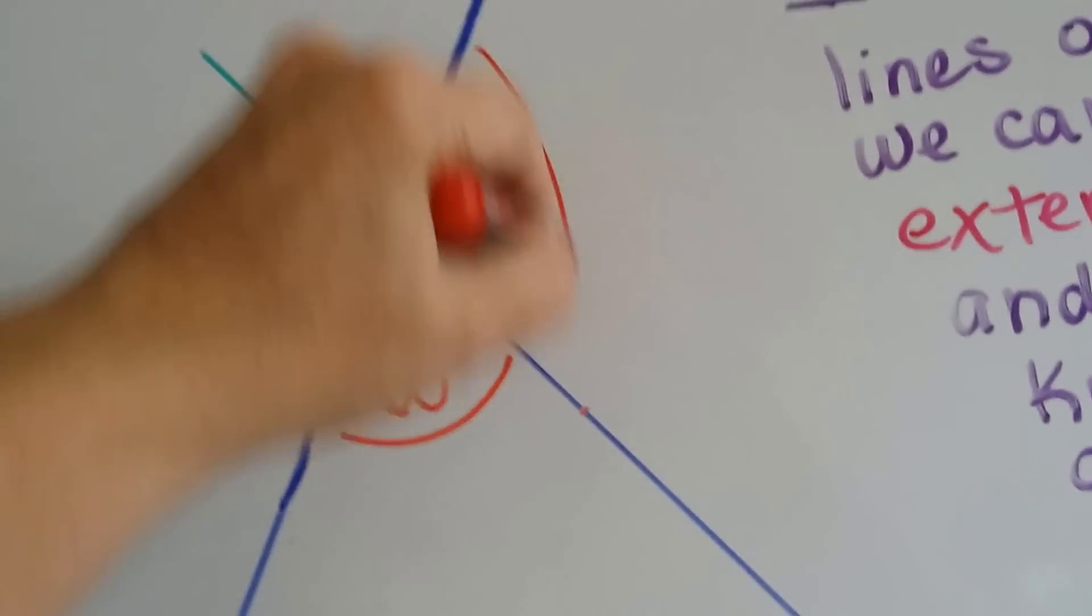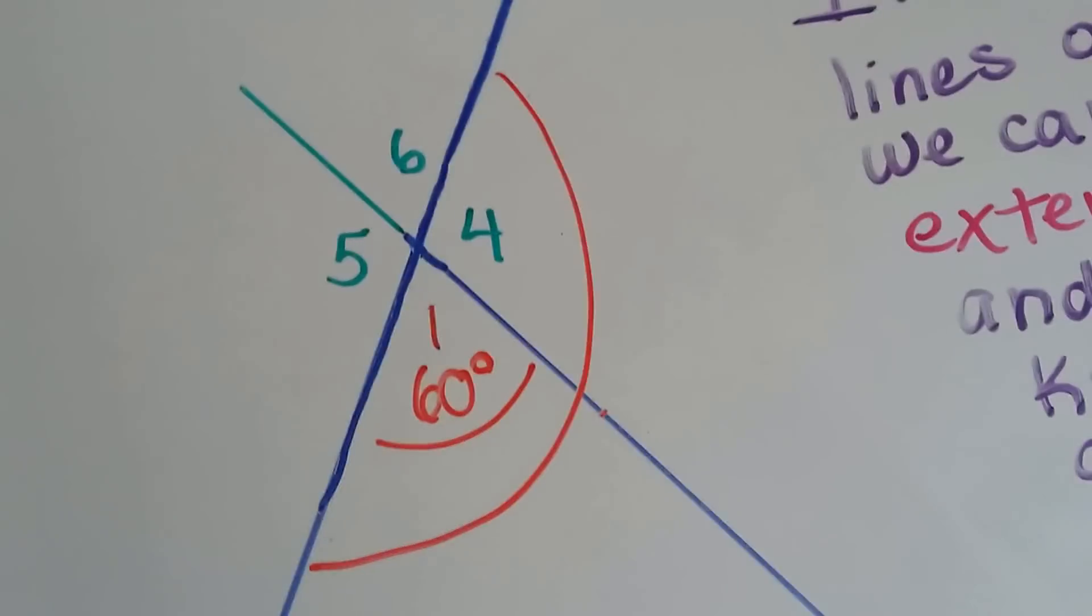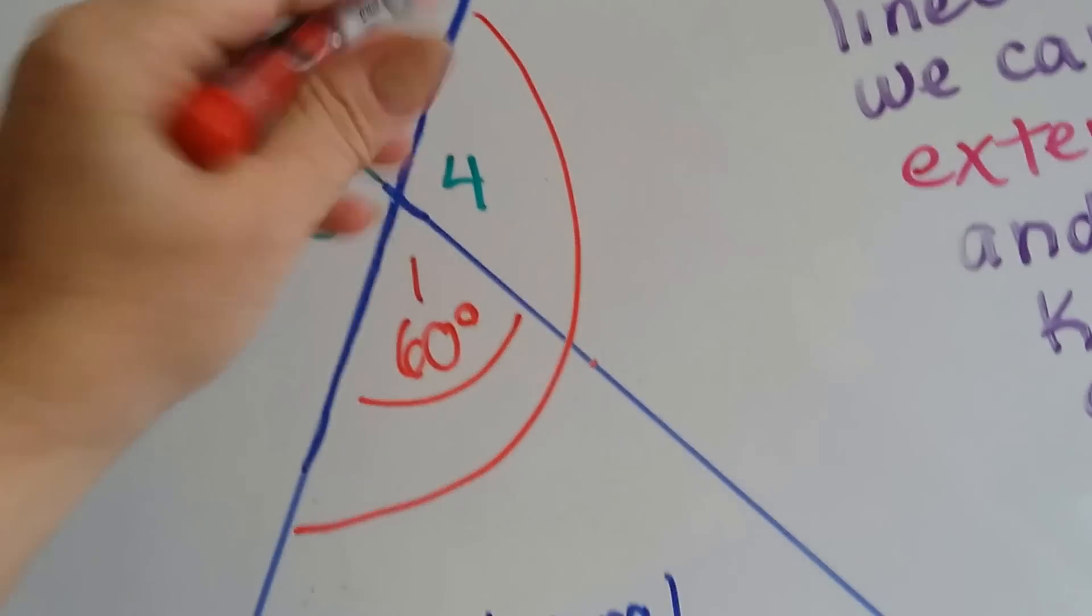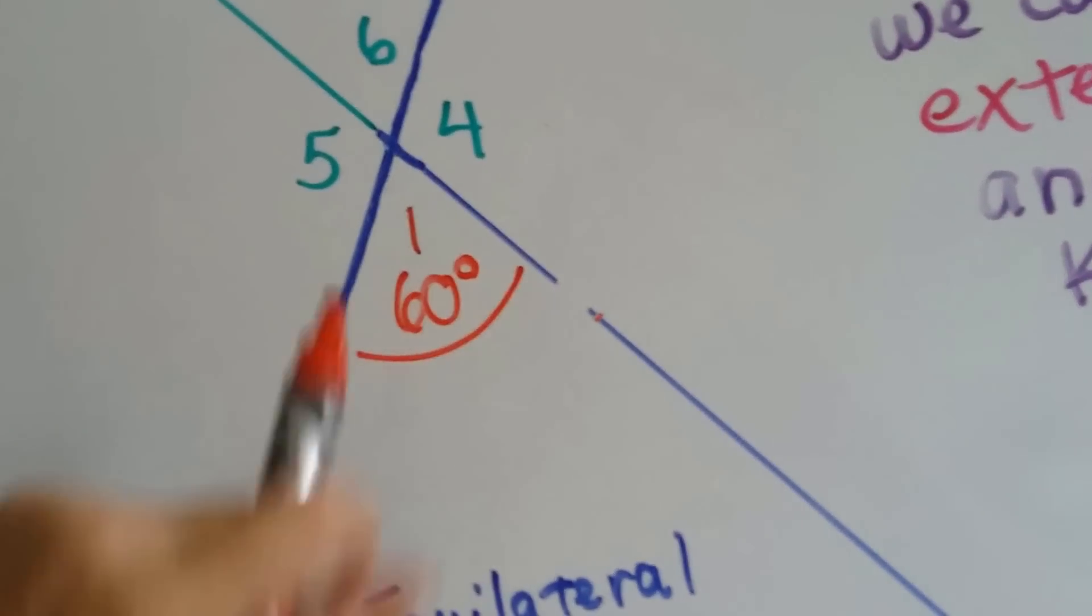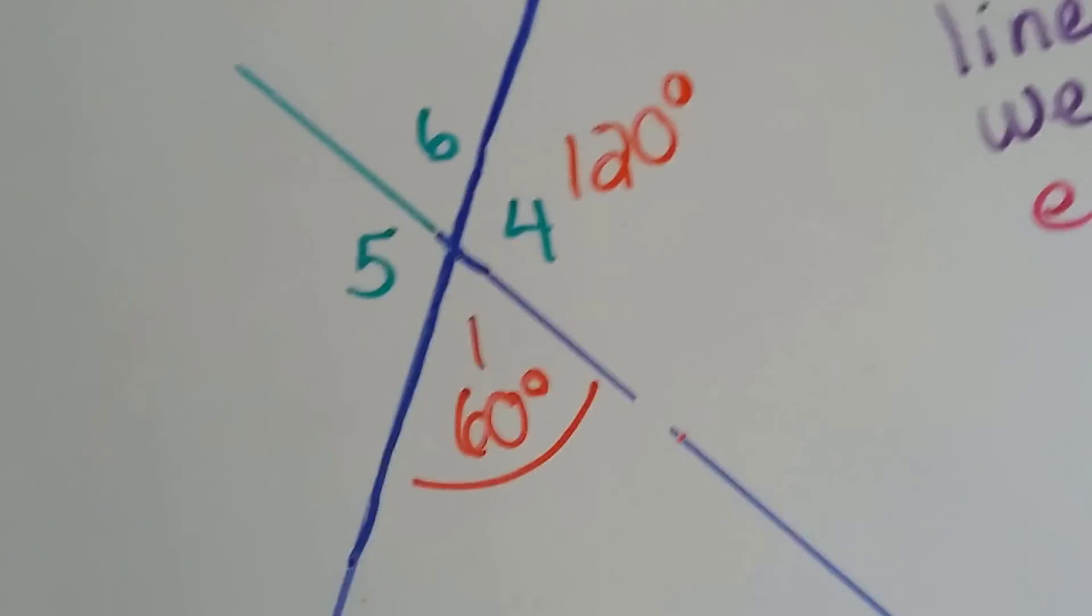Angle 1 and angle 4 are supplementary. This together would be 120 degrees, so if that's 60, then that's got to be 120. See that?